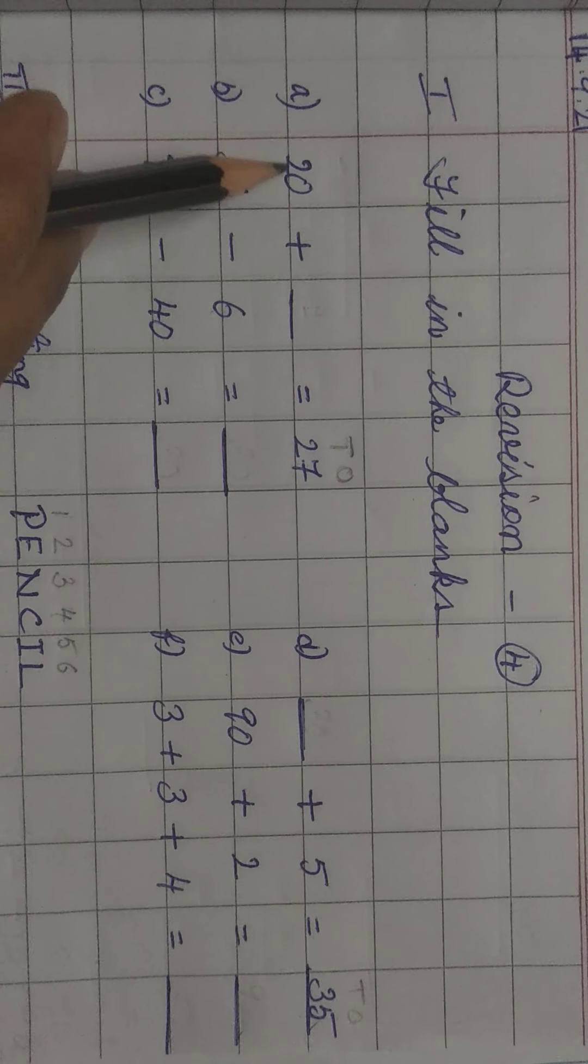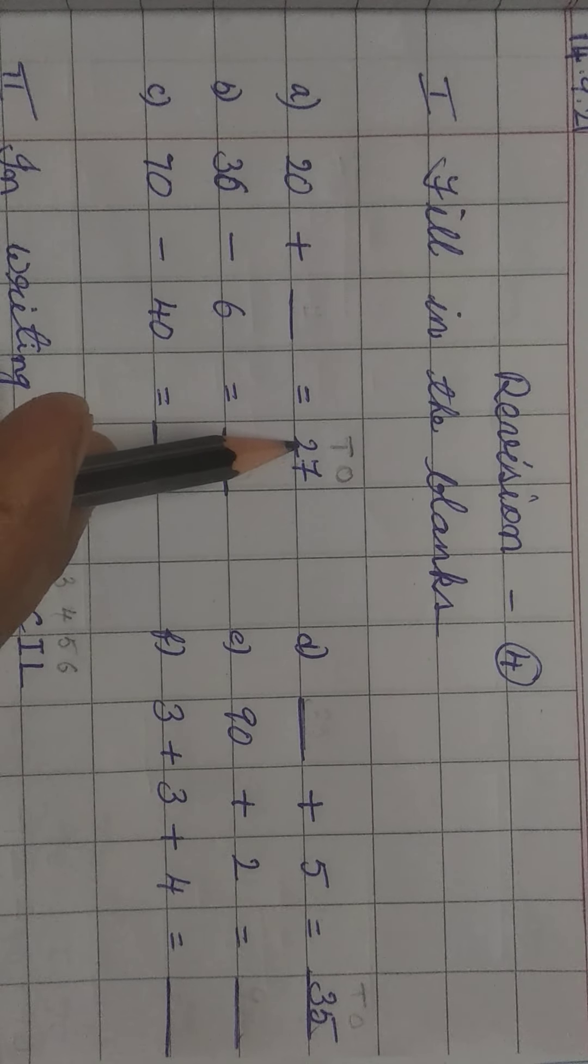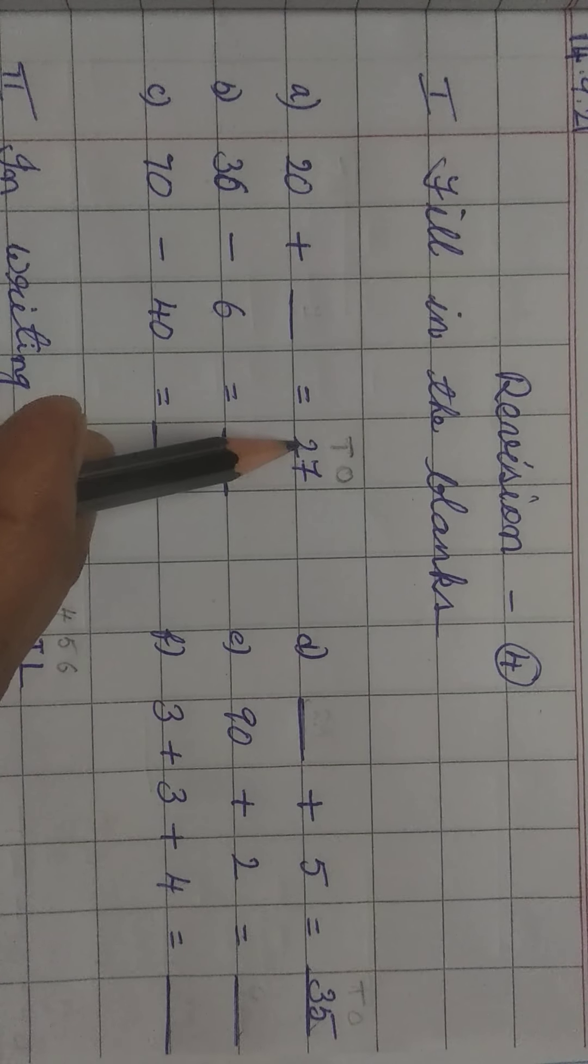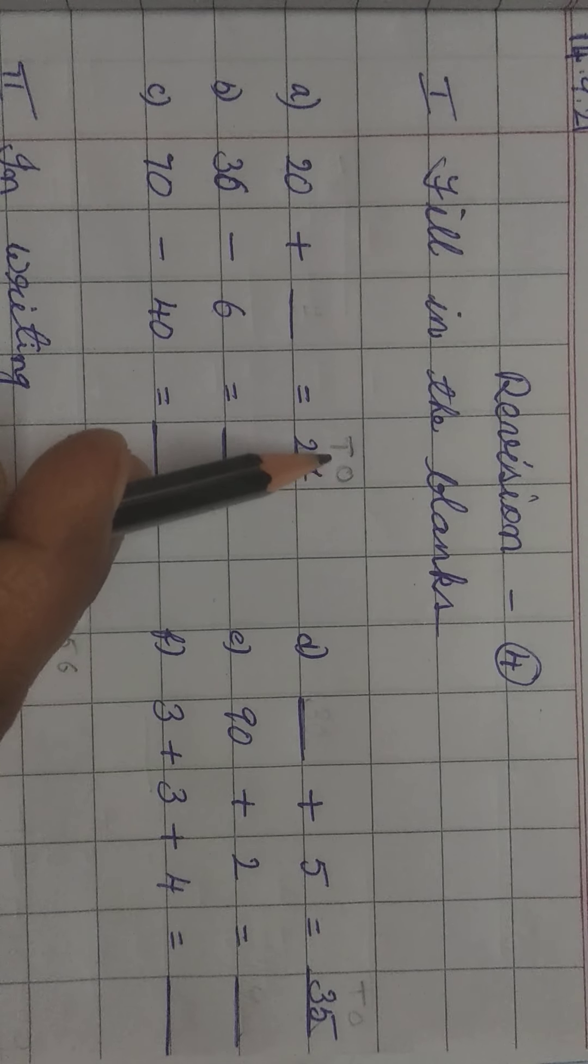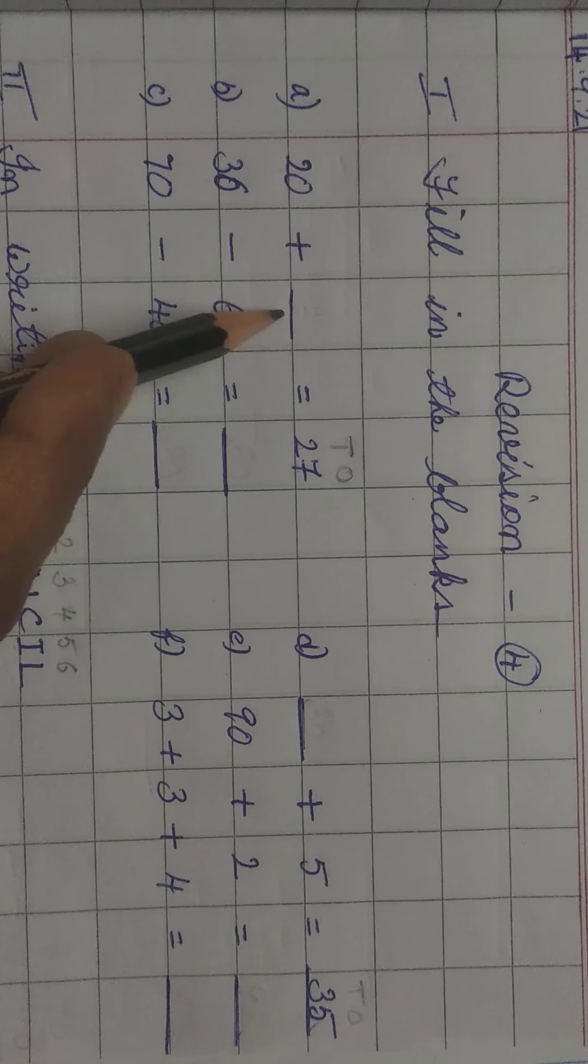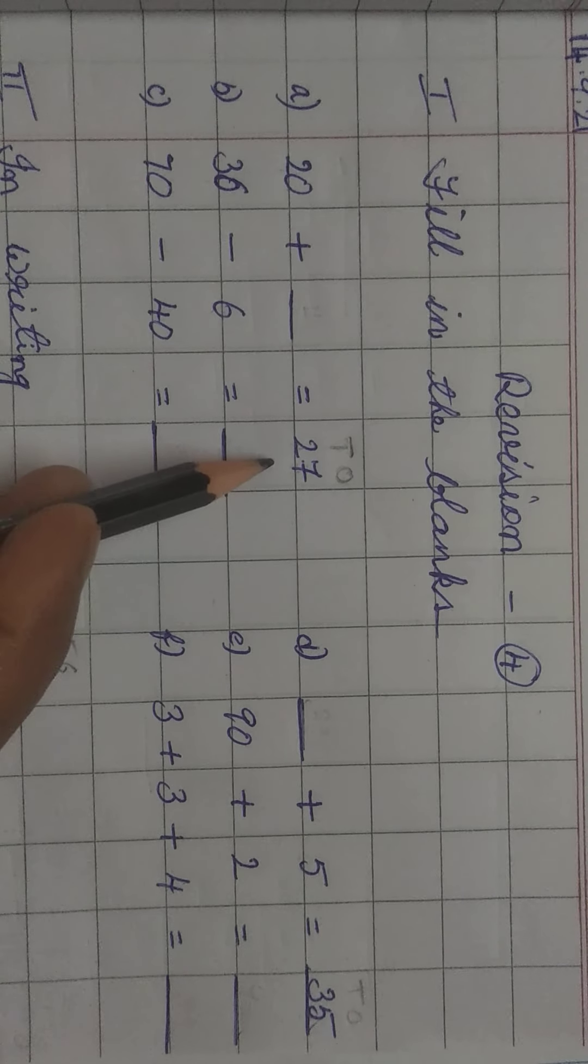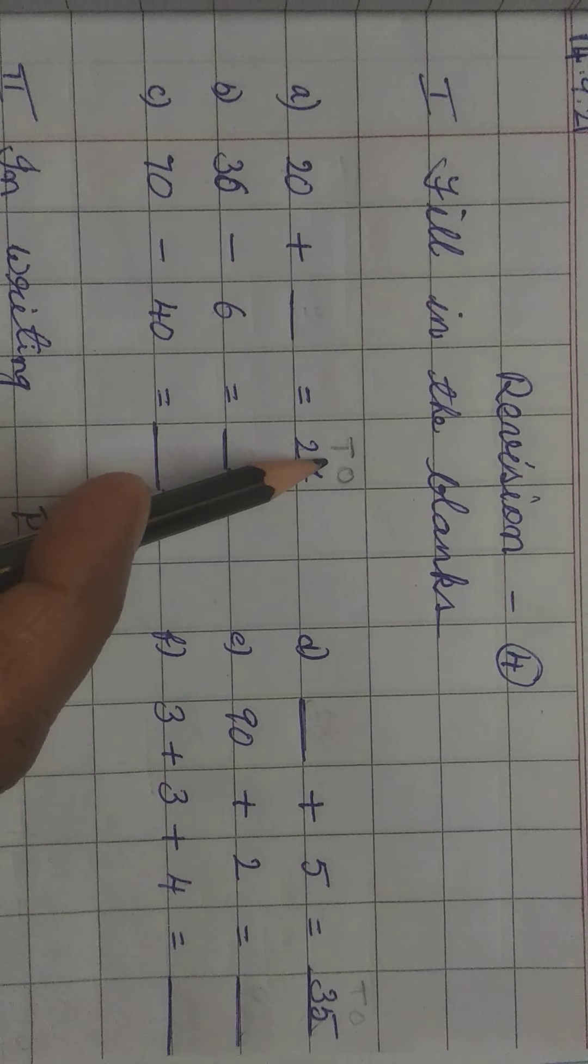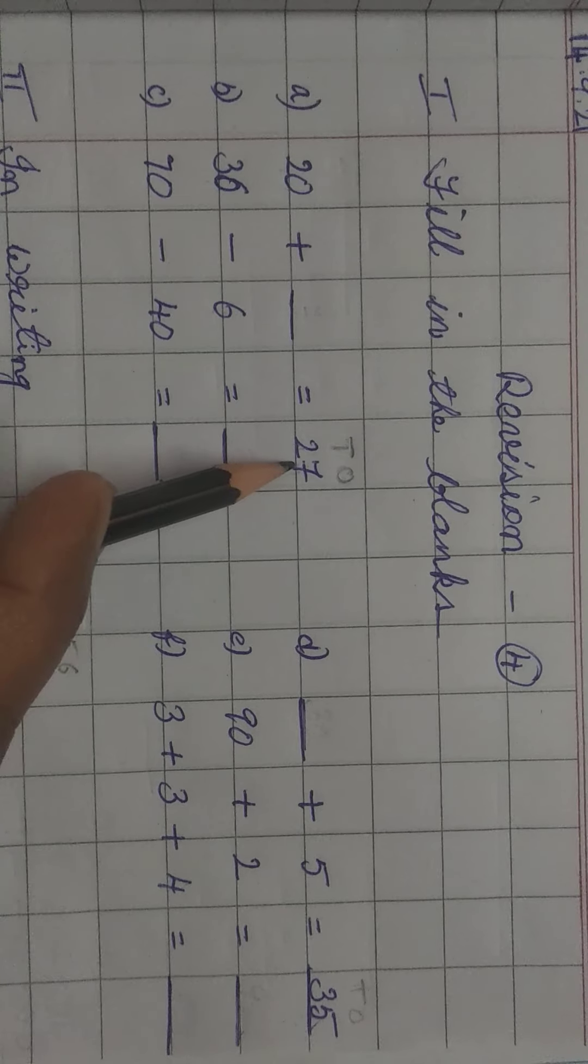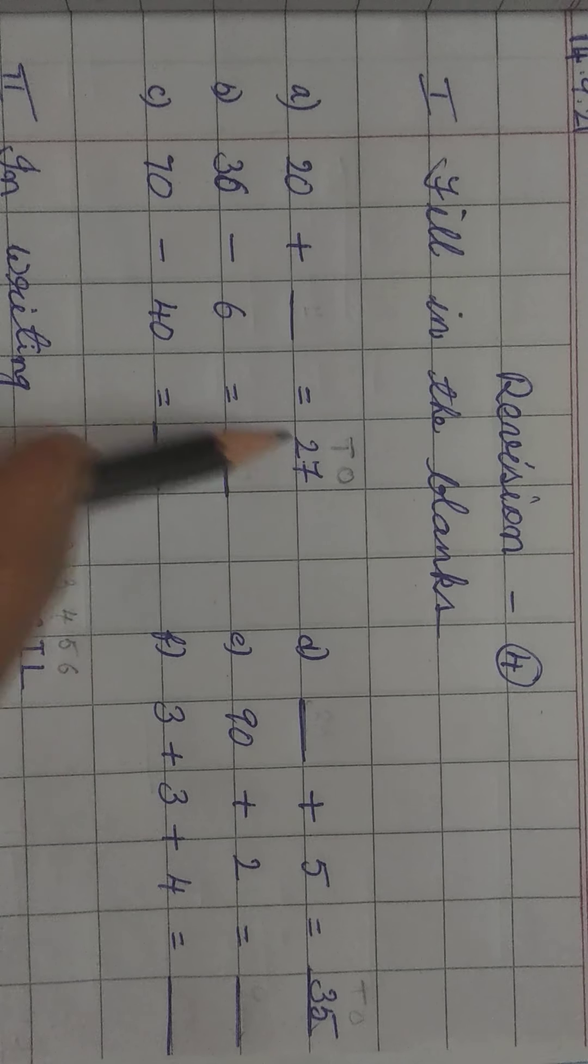7 is in ones place, 2 is in tens place. Children, here 20 means tens place me kaunsa number hai? 2. 2 tens means 20, hai na? Ones place me kya number hai? 7. 7 ones hai na? You have to write 7 here. Understand, children? You are doing this daily in school, in class. O means ones, T means tens. Understand?